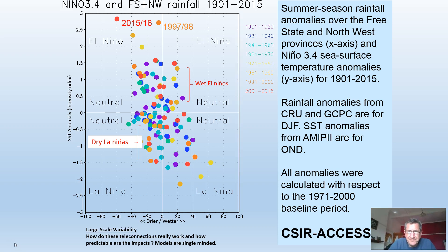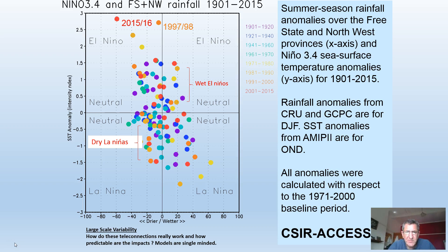This image shows the impact of El Niños and La Niñas — big global events with local impacts. On the y-axis is the strength of a particular El Niño event — how powerful it is. On the x-axis, the middle is normal, left is drier than normal, and right is wetter than normal. So if we get a very strong El Niño, we tend to get drier weather for that particular season, and if it's a La Niña event, we tend to get a wetter one.